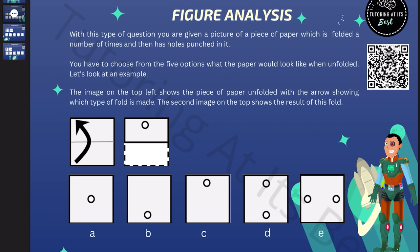So let's take a look at the example question here. Well, as you can see, the image on the top left shows the piece of paper unfolded with the arrow showing which type of fold is made. And the second image on the top shows the result of this fold.